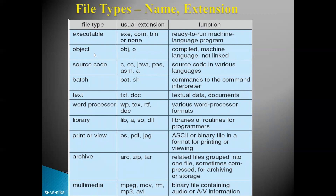The second type is object files, with extensions .obj or .o — these contain machine language (object) code but are not linked. The third type is source code files written in a programming language: C code has the extension .c, Java files have .java, Pascal programs have .pas, assembler programs have .asm, and library files may have the extension .ta. Command interpreter programs have extensions .bat or .sh and are called batch files. Text files have extensions .txt or .doc.